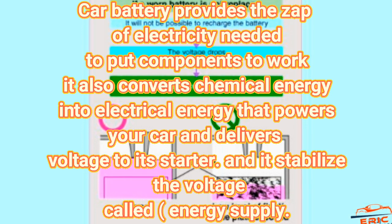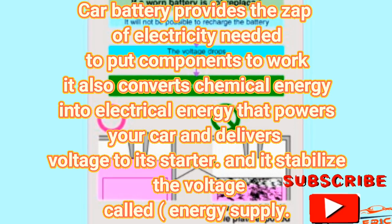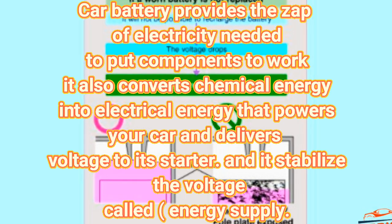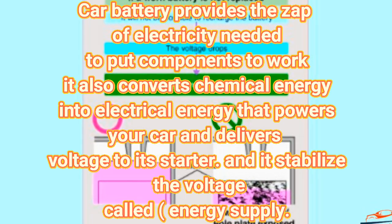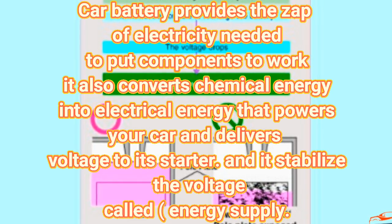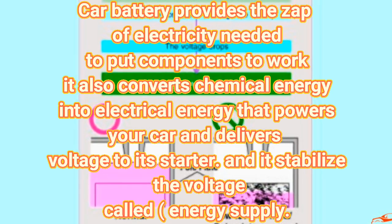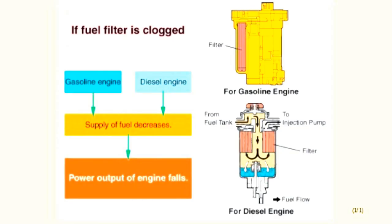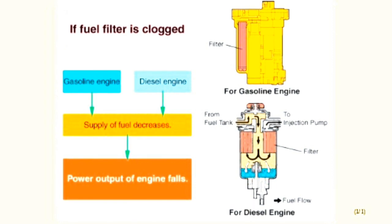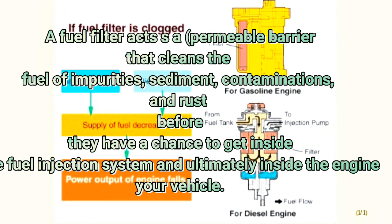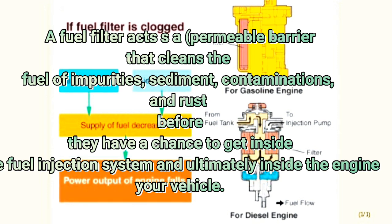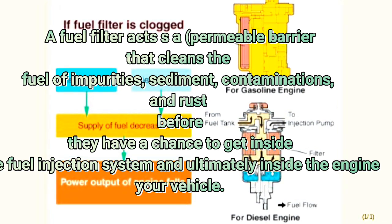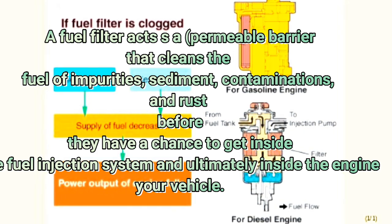Here we have the fuel filter. A fuel filter acts as a permeable barrier that simply keeps the fuel full of impurities, sediment, and contamination out before they have a chance to get inside the fuel injection system and ultimately inside the engine of your vehicle. This is a short, quick definition of fuel filter and the important role that it plays on the engine.